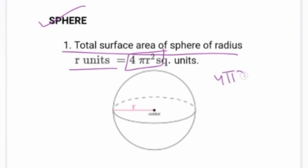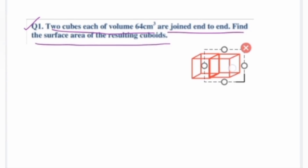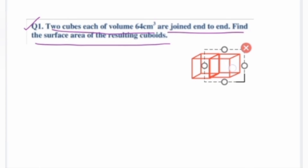Now we have questions in this worksheet. Question number 1: Two cubes, each of volume 64 cm³, are joined end-to-end. Find the surface area of the resulting solid.